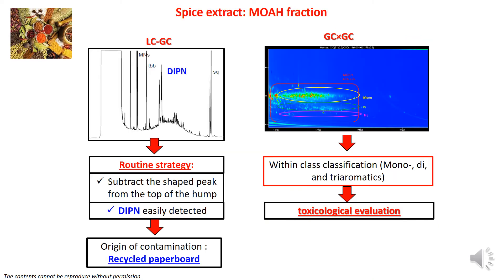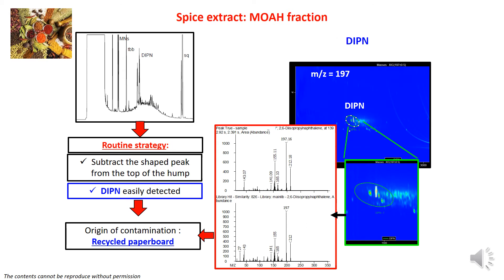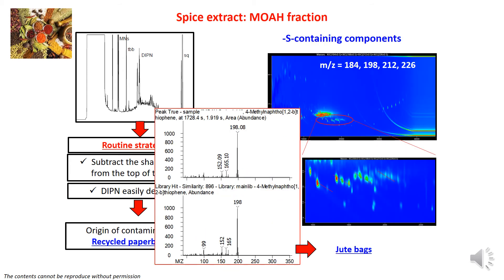On the MOAH fraction of the spice sample, we see a hump characterized by the presence of DIPN — diisopropyl naphthalene — which is a marker of contamination from recycled paperboard. In the GC×GC plot we can provide subclass characterization — mono-, di-, and triaromatics — useful for toxicological evaluation. We can also confirm using MS the presence of DIPN as a marker of recycled paperboard origin, and thanks to time-of-flight mass spectrometry, we can additionally detect sulfur-containing components as markers of jute bag contamination.